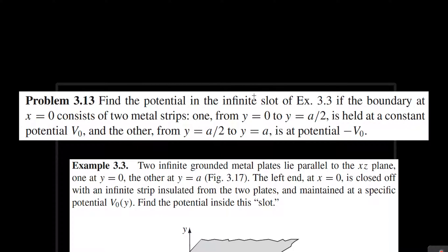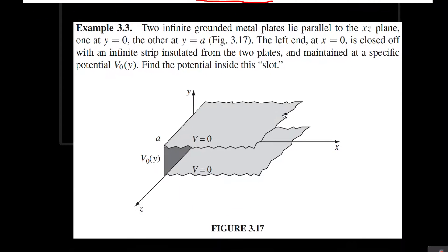In this problem, we're going to solve Laplace's equation for this situation here, using the setup in example 3.3 but with these conditions. This special plate has its lower half set to a potential of V0, and the top half will have a potential of negative V0. We need to find the potential inside the rest of the enclosed space.